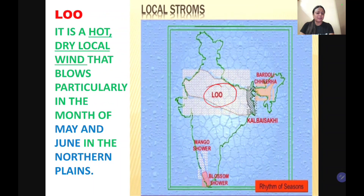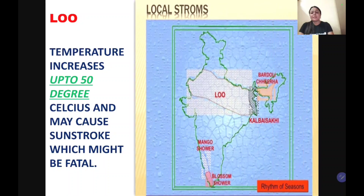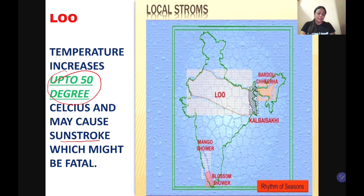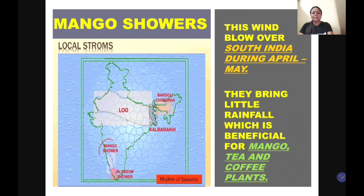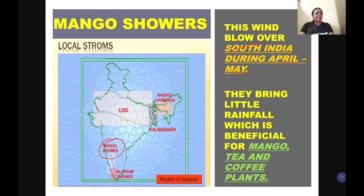The next local wind is Loo — a hot, dry local wind that blows particularly over the northern plains of India. It can cause sunstroke, which might be fatal, so we need to be very careful when Loo is blowing. It affects Bihar, Punjab, Haryana, and Uttar Pradesh. Then there are Mango Showers, which blow over South India during April and May and bring a little rainfall — very good for mango, tea, and coffee cultivation.